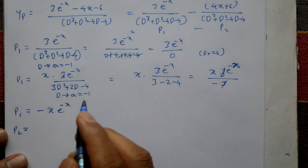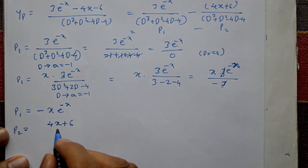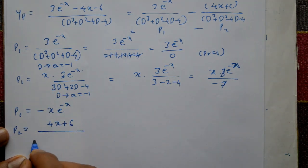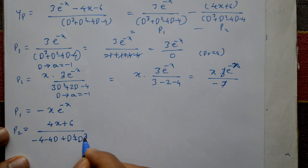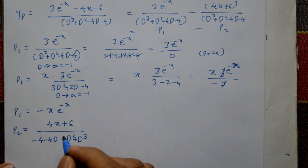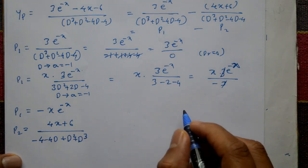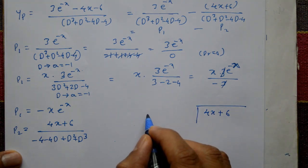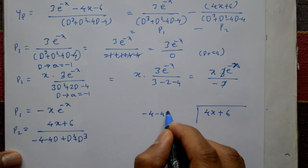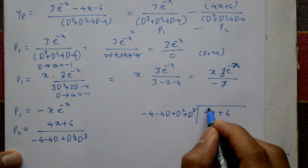Now for P2, we have (4x + 6) / (D³ + D² - 4D - 4). Writing in increasing order of D: (-4 - 4D + D² + D³). Rewrite as -4(1 + D - D²/4 - D³/4) to prepare for polynomial long division.